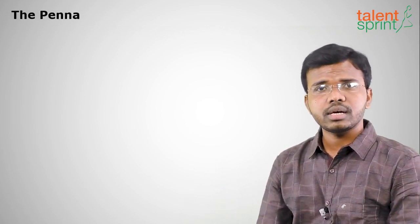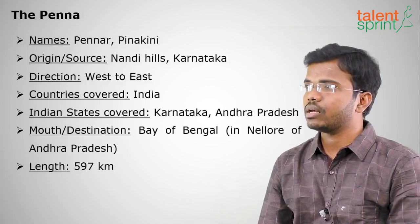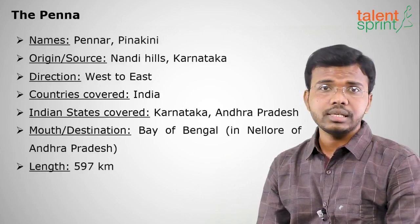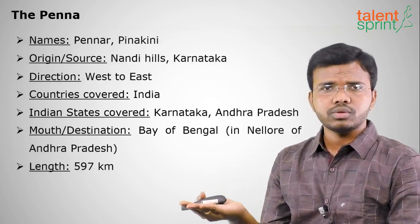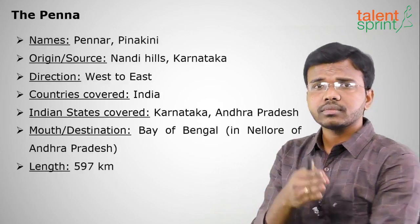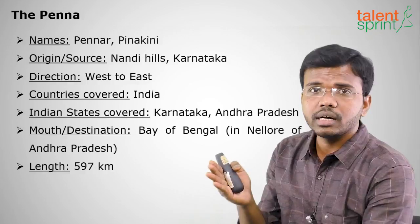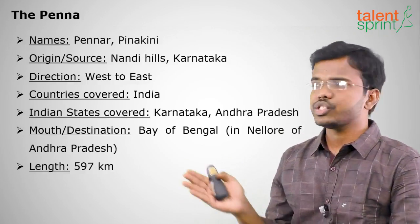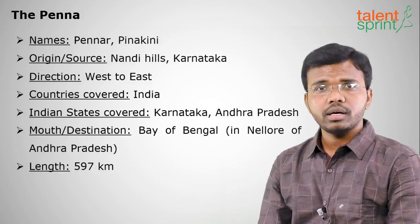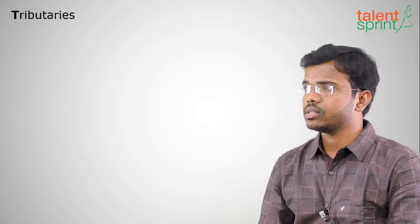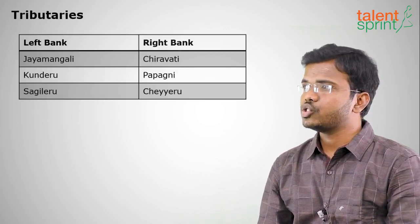The third peninsular river is the Penna, also called Penner or Pinakini. Its origin is at Nandi Hills in Karnataka. It flows entirely within India, from west to east, through Karnataka and Andhra Pradesh, and meets the Bay of Bengal at Nellur in Andhra Pradesh. Its length is around 597 kilometers.